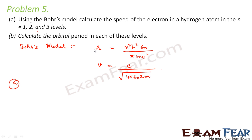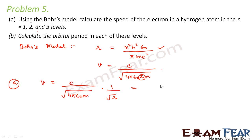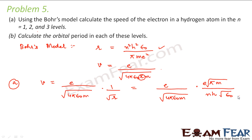So now let us try to calculate the speed of the electron for n equal to 1, 2, and 3. v is equal to e divided by the square root of 4π ε₀ m, into 1 over the square root of r. Substituting the expression for r, this simplifies to e² divided by 2n ε₀ h.